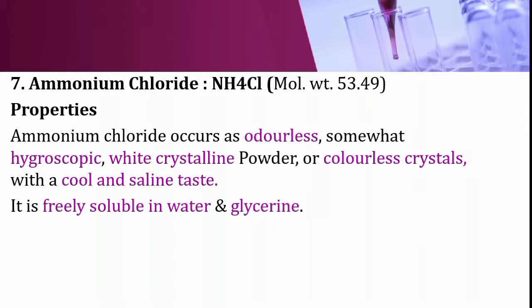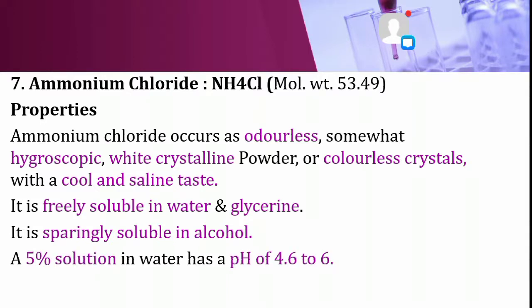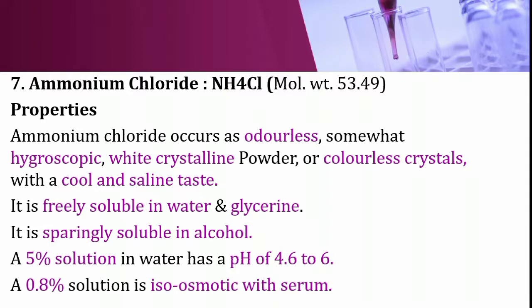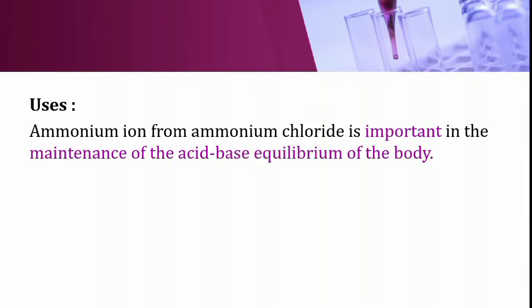Ammonium chloride is freely soluble in water and glycerin, and sparingly soluble in alcohol. A 5% solution in water has a pH within the range of 4.6 to 6, and its 0.8% solution is isosmotic with serum.